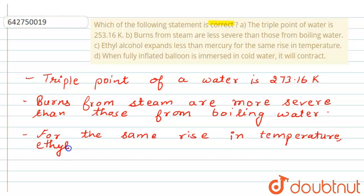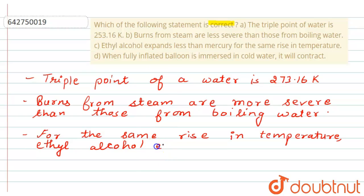Ethyl alcohol expands more than mercury because of the greater value of the coefficient of volume expansion. So we can write here: ethyl alcohol expands more than mercury.